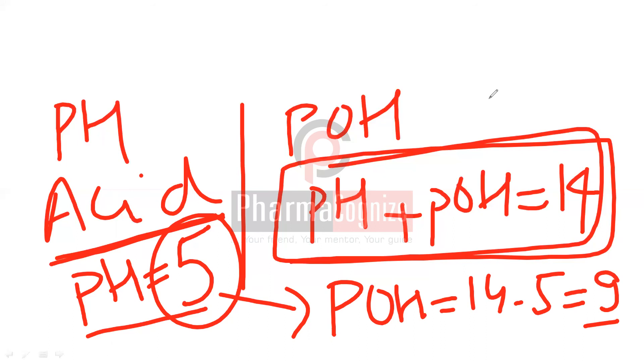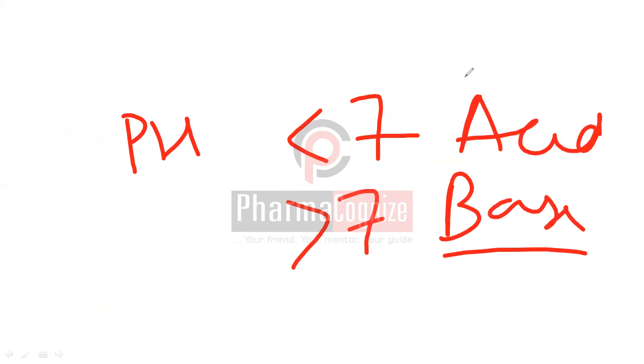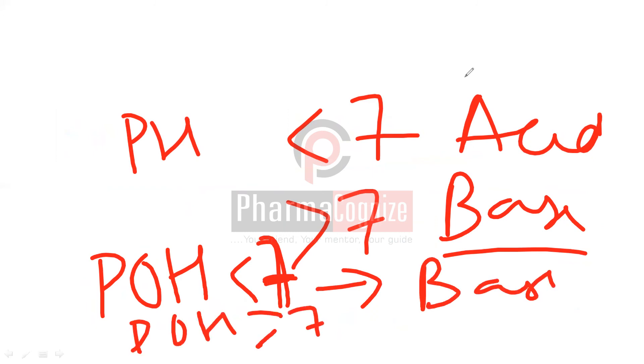So pOH for this would be 9. The rule that we study about pH is if pH is less than 7, it is acid. If pH is more than 7, it is base. Similarly, this rule is applicable to pOH. If pOH is less than 7, that means it is a base. And if pOH is more than 7, that means it's an acid.